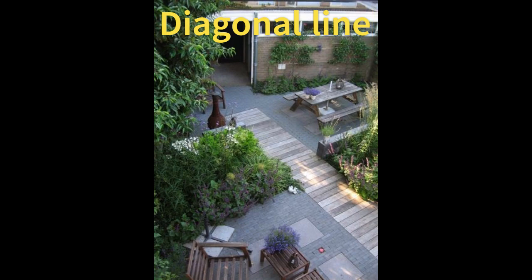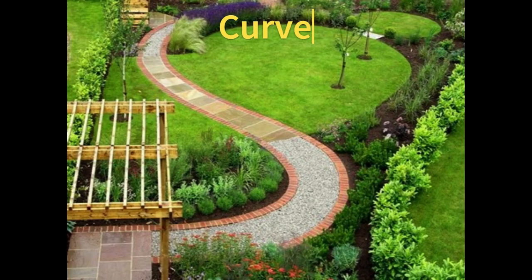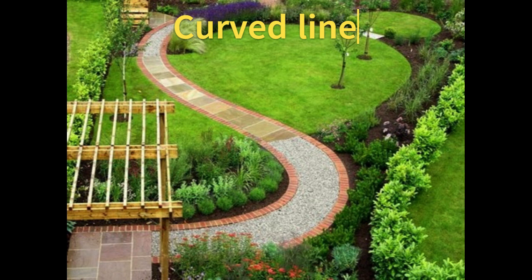Diagonal lines represent energy. Curved lines are used in informal design. They are relaxing, direct the eye to move at a slower pace, and add mystery to the space by creating hidden views. They can be found in internal pathways or pathways inside big lawns, curved edges, etc.